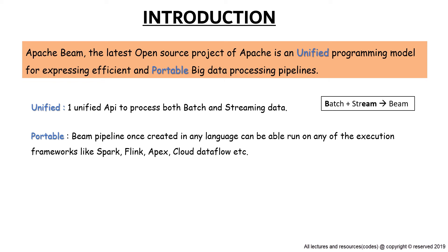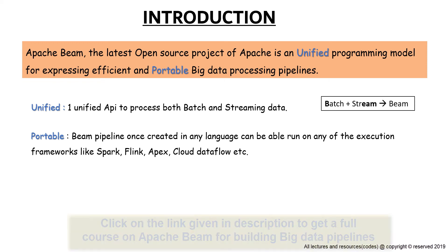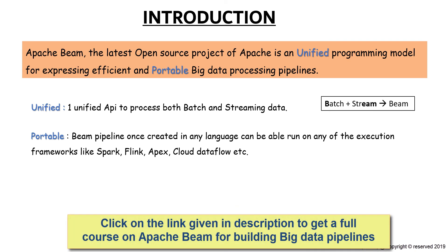This portability has one very obvious advantage. As the pipeline is developed only once, over time if you want to change the runtime — like switching from Spark to Flink, or Flink to Cloud Dataflow, or even if any new engine comes in the future — you or your company doesn't have to worry about the redevelopment of logic. If that engine supports Beam, then the migration would be like a cakewalk.